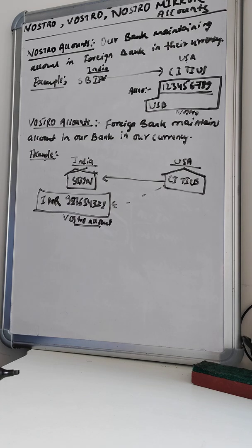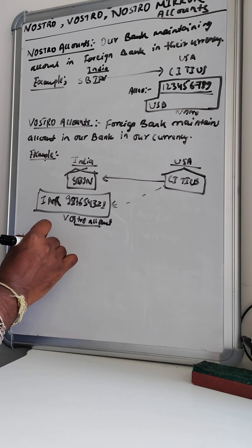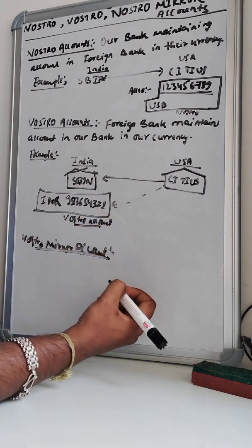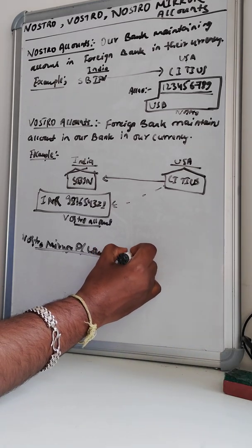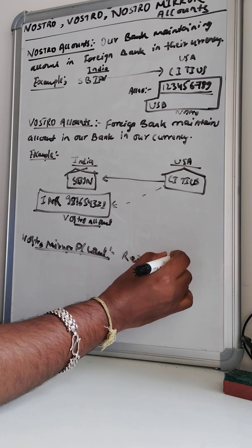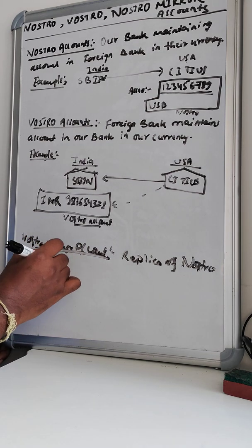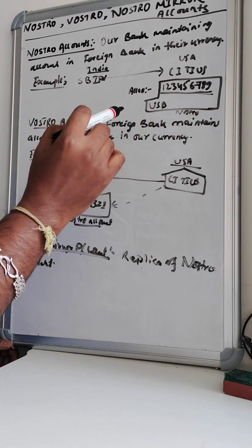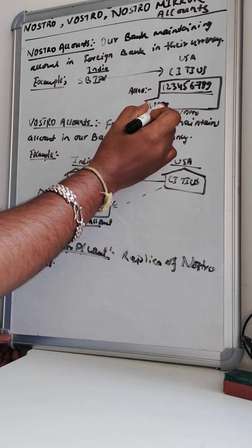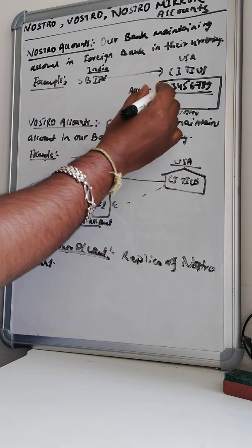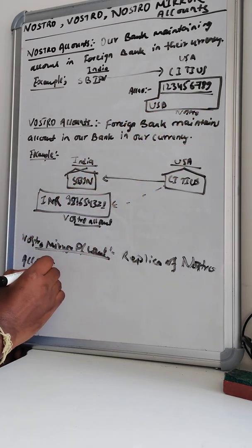Now there is one more thing we need to understand — what is the Nostro Mirror account. The Nostro Mirror account is basically nothing but a replica of the Nostro account. Since this is our Nostro account for SBI Bank, the Nostro Mirror account is just a replica of account 123456789 USD.